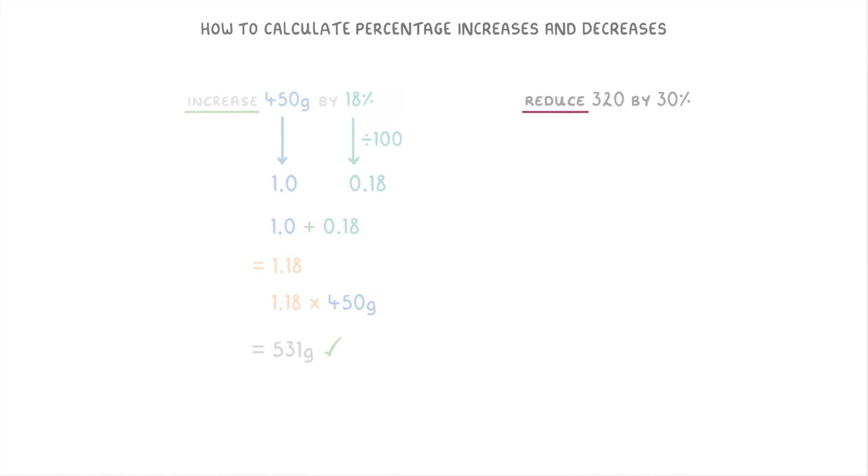For this second one, we need to reduce or decrease 320 by 30%. So this time, we still think of 320 as 1, and write the 30% as 0.3. But because we're reducing or decreasing this time, we're to do 1 minus 0.3 to get 0.7 as our multiplier. Then we just multiply 320 by 0.7 to get our new value of 224.